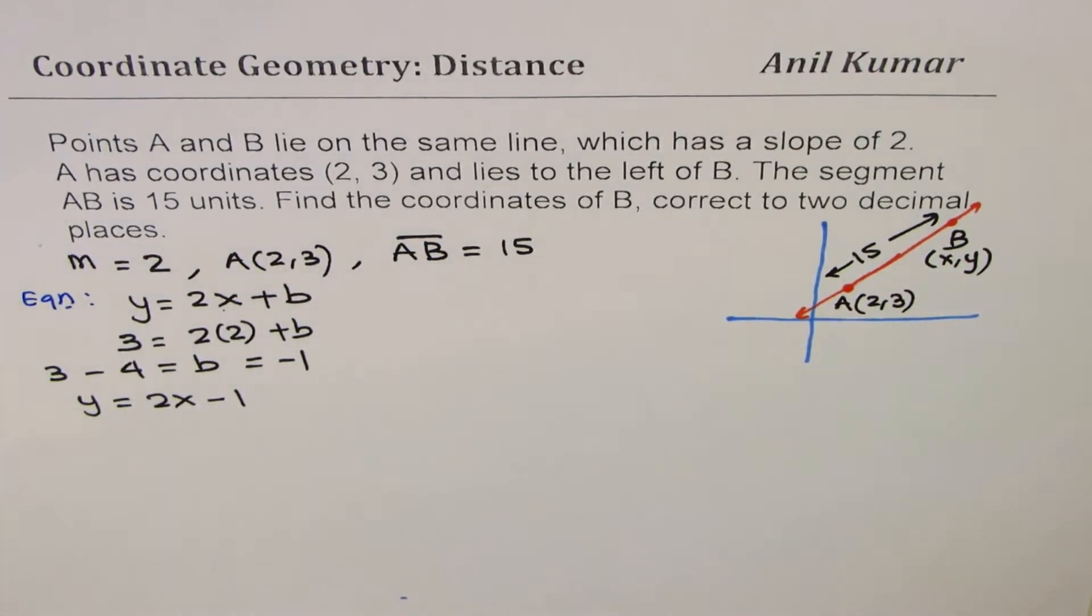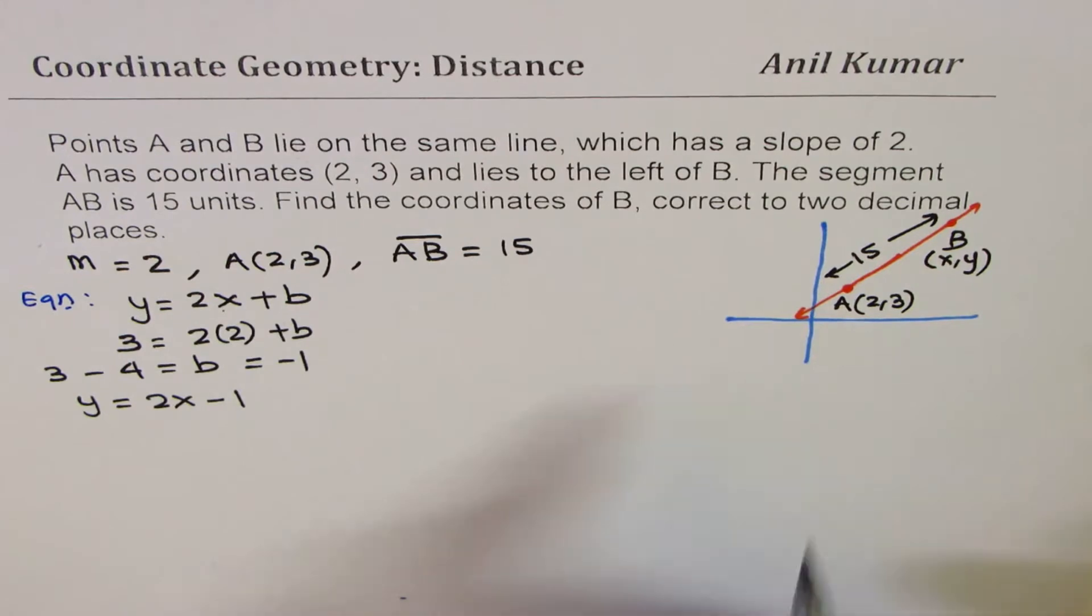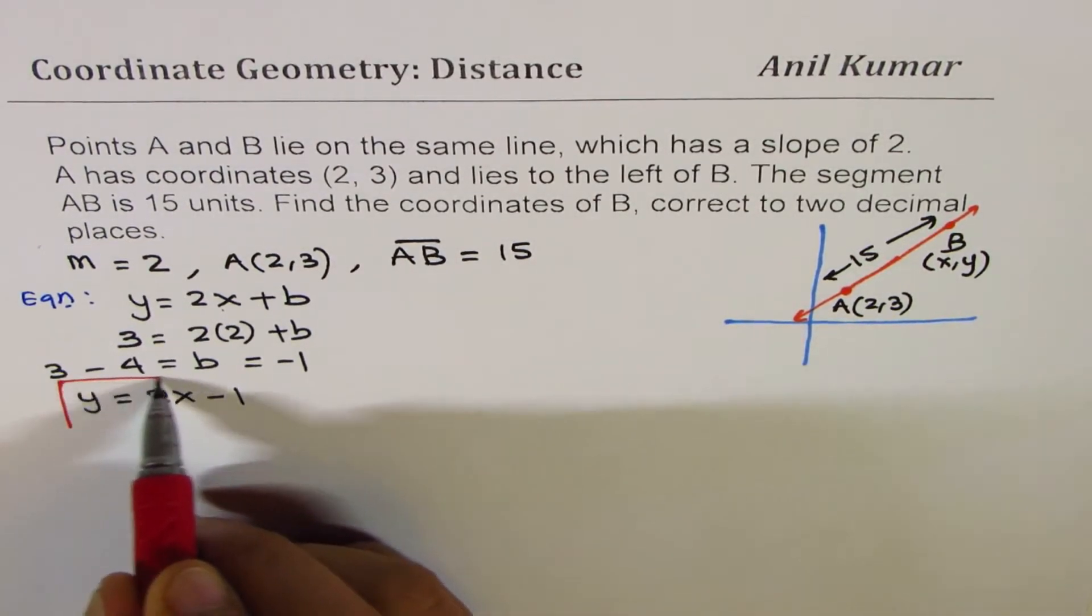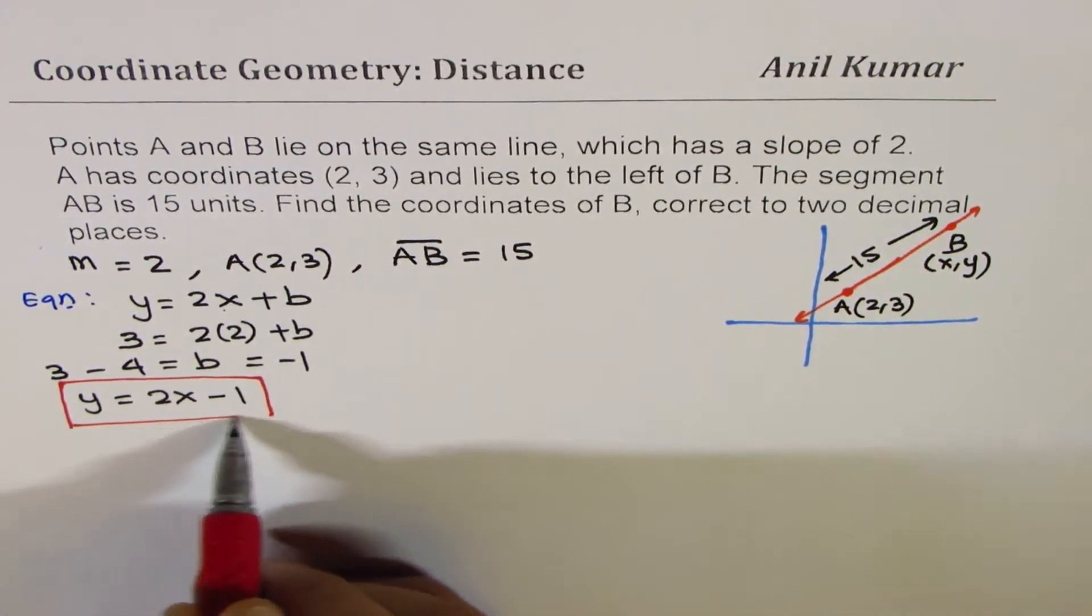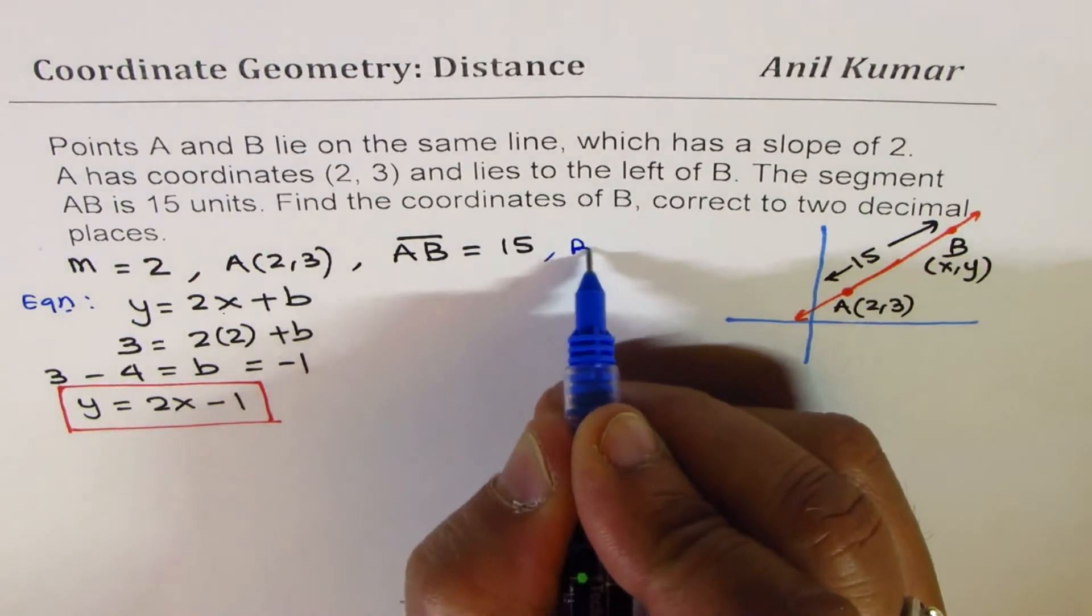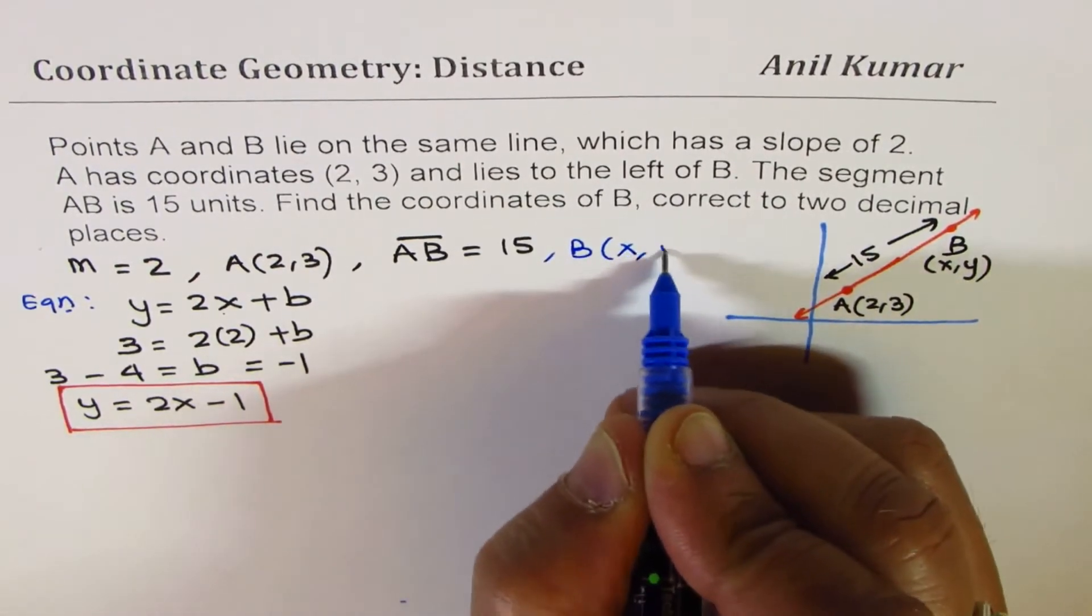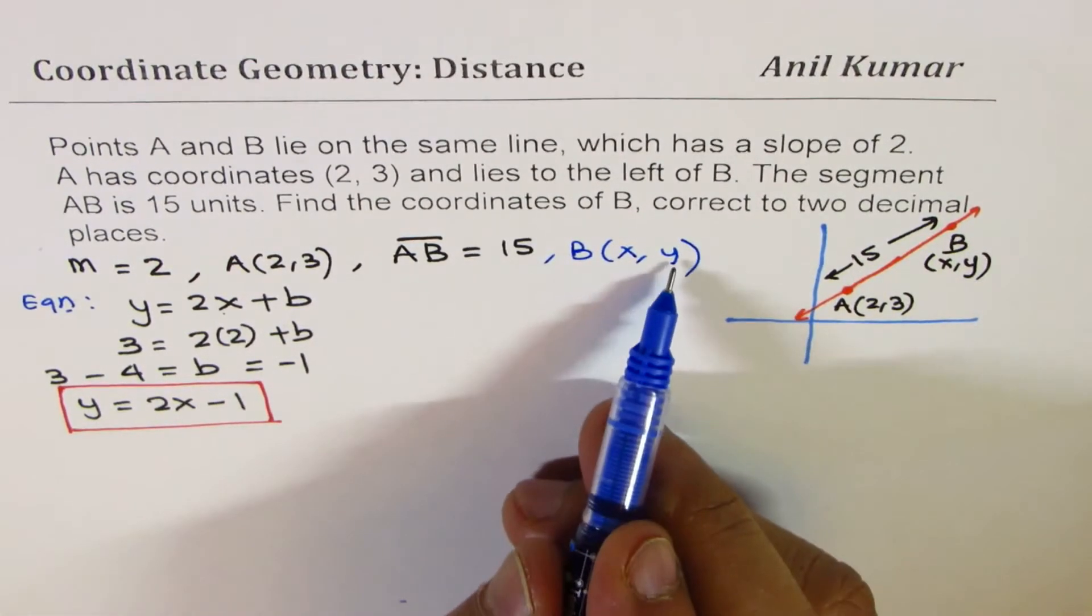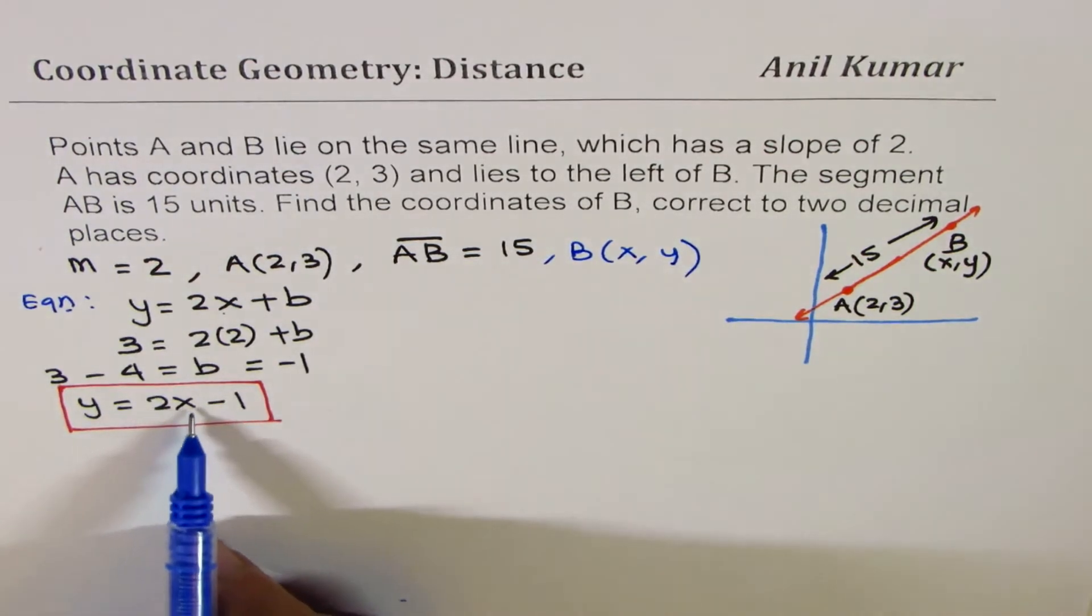Now, this is important, right? Both the points are on the line whose equation is y = 2x - 1. So, that means that if I am saying point B is (x, y), I can write this y as 2x - 1.